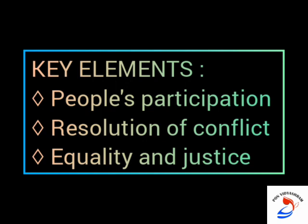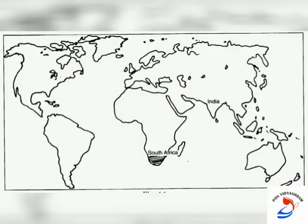Before we study about people's participation, resolution of conflict, equality and justice, we'll have a small story in the book about the people who suffered due to racial discrimination. What kind of difficulties people faced during those periods is mentioned in this story.